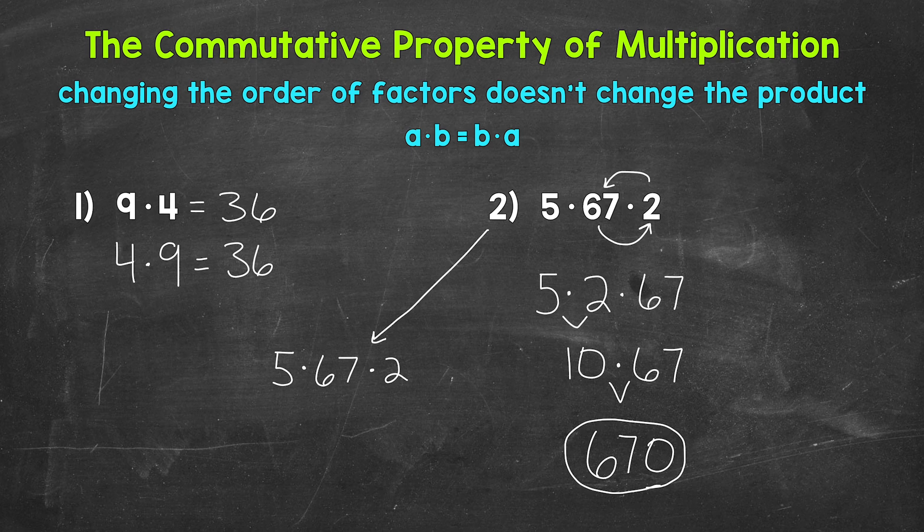Let's work through that off to the side. So 67 times 5: 5 times 7 is 35. 5 times 6 is 30, plus that 3 is 33. So 335. 5 times 67 equals 335.